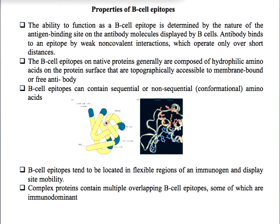Now let us understand what an epitope is. Antibody molecules do not bind to the entire region of an immunogen or antigen. Instead, immunoglobulins bind to discrete sites present on the immunogen or antigen. These discrete sites are immunologically active and can interact with the T-cell receptor or B-cell receptor. These discrete sites are called epitopes.